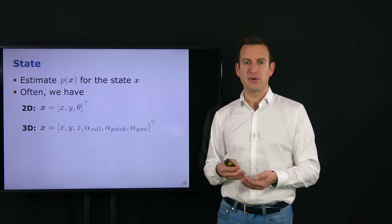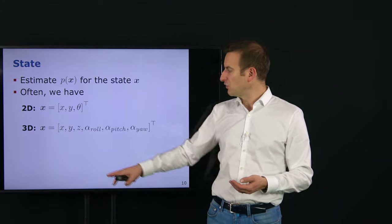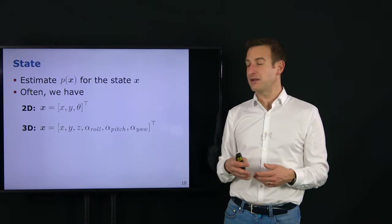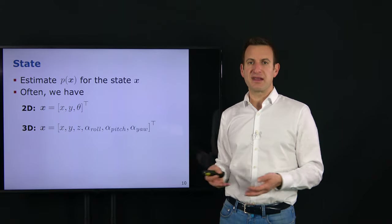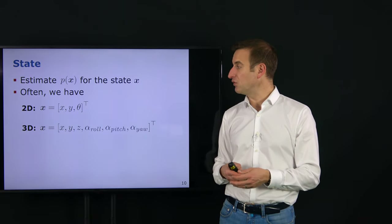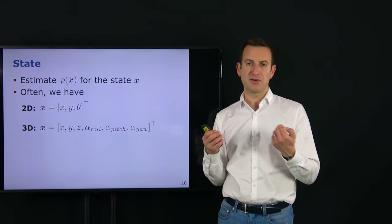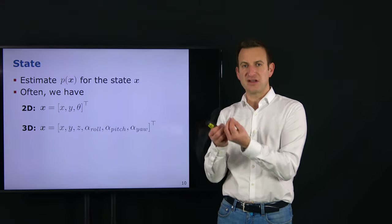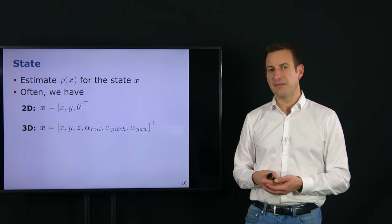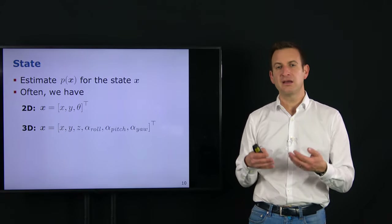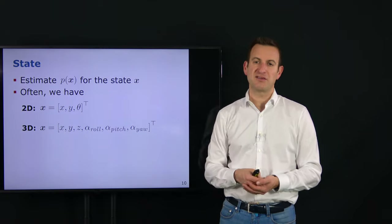For 3D localization with 6 degrees of freedom, we have X, Y, Z coordinates and three rotational angles — for example roll, pitch, and yaw — describing the three different orientations the platform can have. So we either estimate a 3D or a 6D vector for the current position of the platform. Often we are interested in estimating just the current state, though sometimes we are also interested in estimating the full trajectory or path the platform has taken.